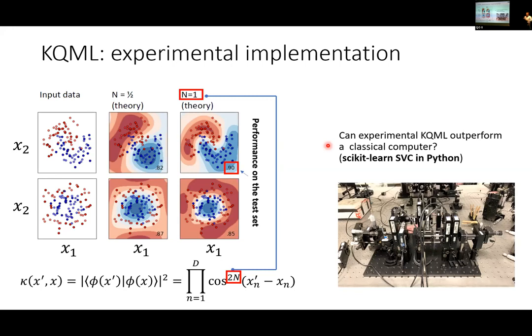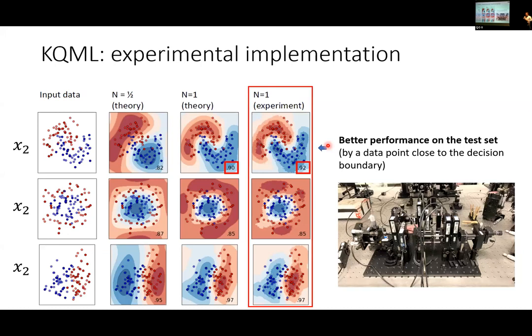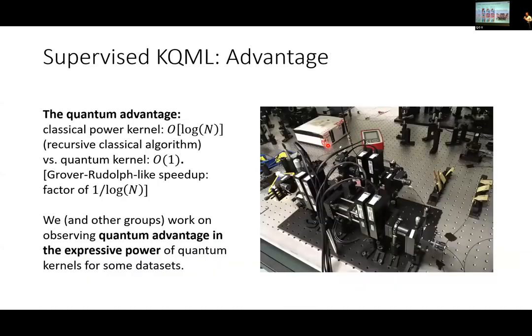Can we do better with experimental quantum optics than with just a Python kernel computed on a typical computer? Yes, but by accident it turned out that for the set of points we measured, we got these decision boundaries. There are some statistical deviations that helped us show that on the test set - the new data points - we can gain something.